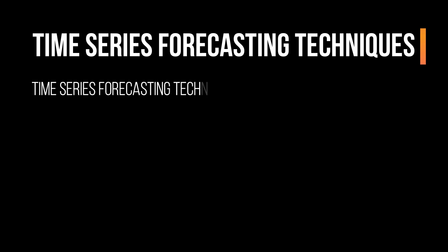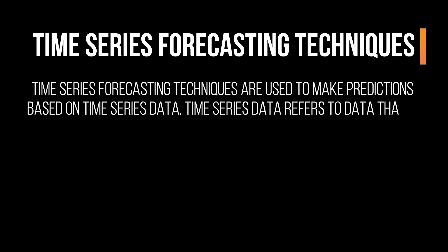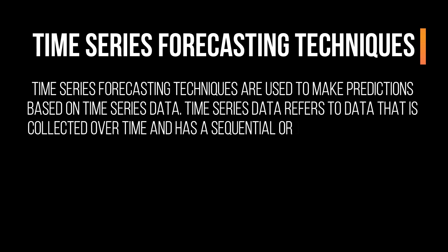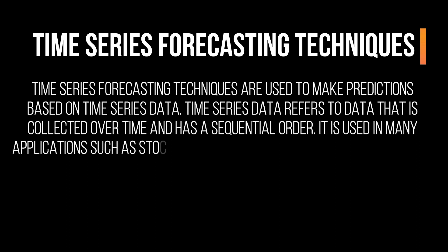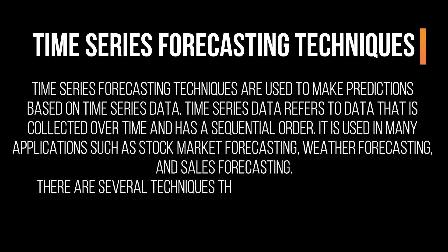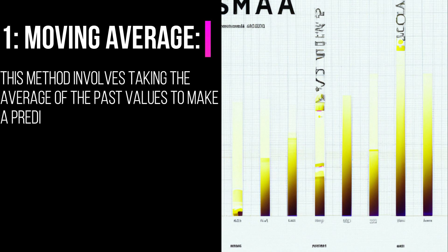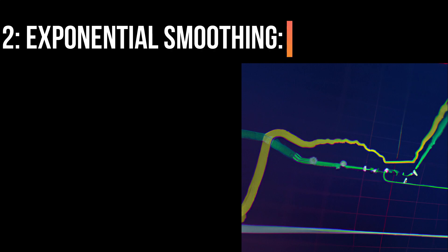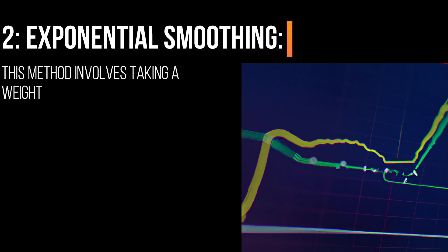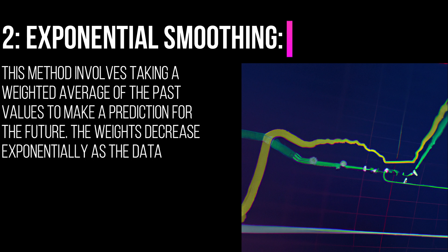Time Series Forecasting Techniques are used to make predictions based on time series data. Time series data refers to data that is collected over time and has a sequential order. It is used in many applications such as stock market forecasting, weather forecasting, and sales forecasting. 1. Moving Average: This method involves taking the average of the past values to make a prediction for the future. 2. Exponential Smoothing: This method involves taking a weighted average of the past values to make a prediction for the future. The weights decrease exponentially as the data gets older.